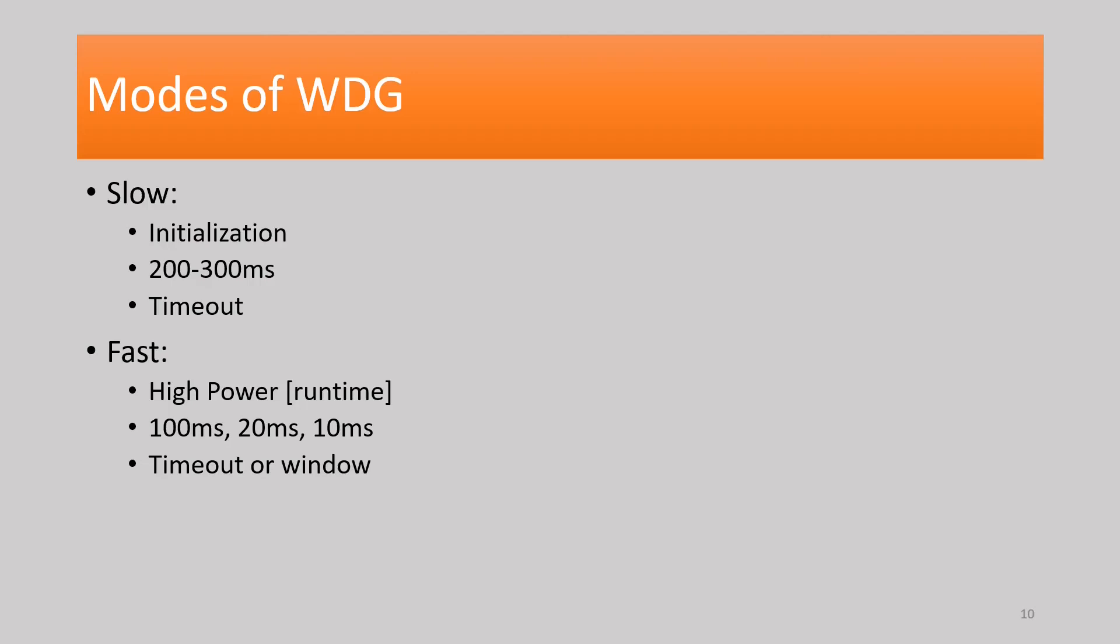The timeout time can be derived from system requirements. For example, the door control unit can have a timeout of 10 milliseconds, body control module can have around 100 milliseconds. Though it still depends on the architectural design and customer requirements, and also it comes from the goals of functional safety. Window mode is the more preferable choice as it is a more robust implementation.